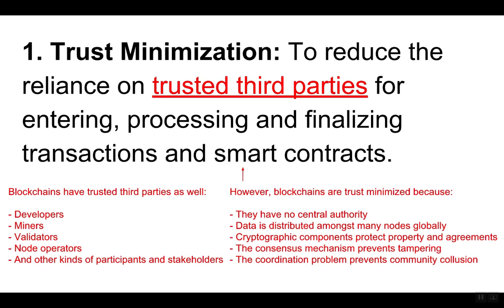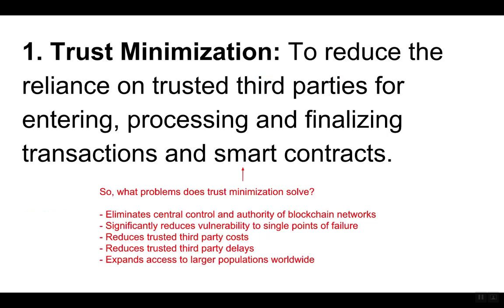However, blockchains are trust minimized because they have no central authority, data is distributed amongst many nodes globally, cryptographic components protect property and agreements, the consensus mechanism prevents tampering, and the coordination problem prevents community collusion. Trust minimization eliminates central control, significantly reduces vulnerability to single points of failure, reduces third-party costs and delays, and expands access to larger populations worldwide.